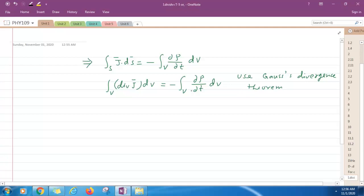What is the theorem? We can convert the surface integration to volume integration using this relation. That is, surface integration A dot ds is equal to volume integration divergence A dv.